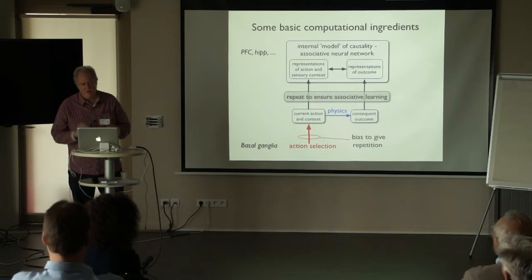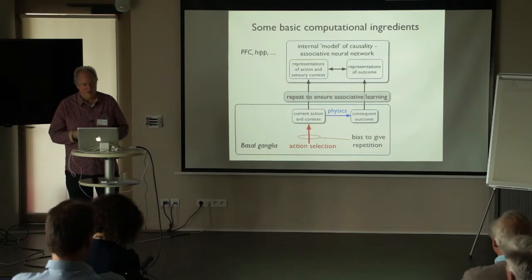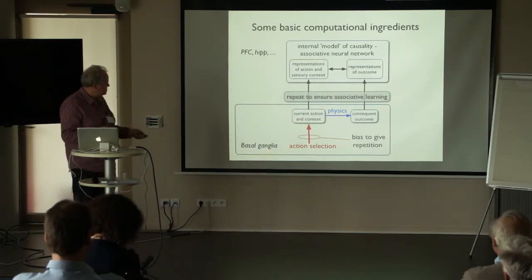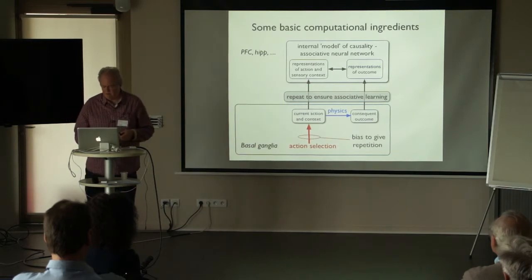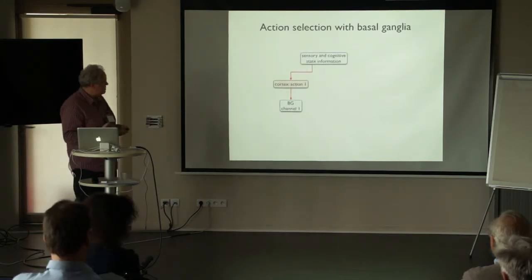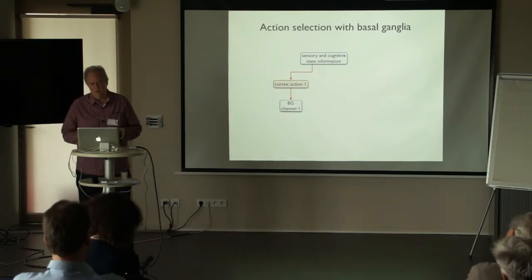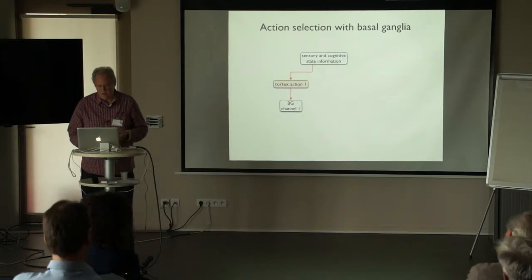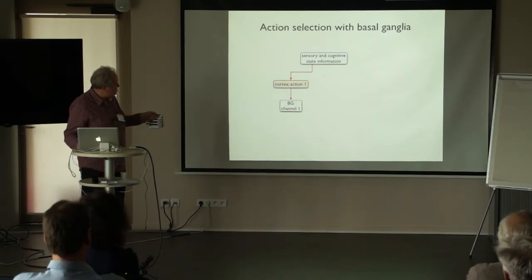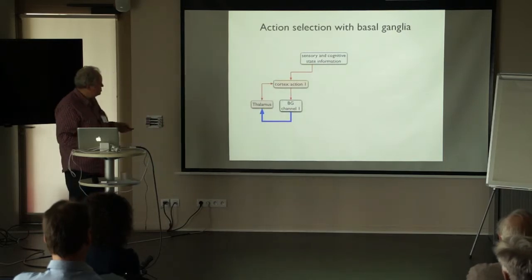The internal models could be anywhere else in the brain — I'm not going to address that particularly today. I want to focus on this notion of the basal ganglia and its bias of policy to repeatedly perform the relevant action to learn these internal models. To rehearse enough of the background to understand what comes later: we imagine that sensory and cognitive state information tend to prime or initiate some nascent actions in cortex, which then send requests down to the basal ganglia in action-specific channels.